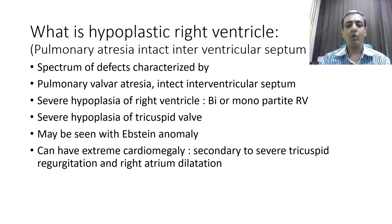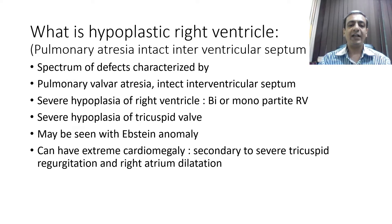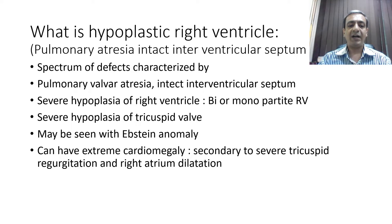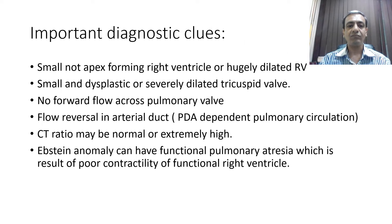In PA IVS, the RV can have only one or two compartments — inlet only, inlet and trabecular portion, or inlet and outlet. There is a hypoplastic or small tricuspid valve. Occasionally it can be seen with Ebstein anomaly, and in rare cases due to severe tricuspid regurgitation, there can be a dilated RA, dilated right ventricle, and a very large heart.